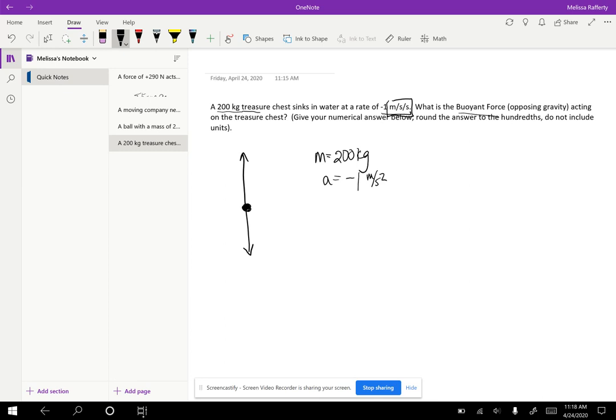We're looking for the buoyant force. What is the buoyant force? It opposes gravity acting on the treasure chest. So when you throw something in water, gravity tries to pull it through the water. And the force of gravity on an object is called its weight. But then there's a force that acts upward against gravity called the buoyant force. That's why nothing sinks at the acceleration of gravity. It sinks slower because there's the buoyant force acting against it, F_b. That's the unknown here.